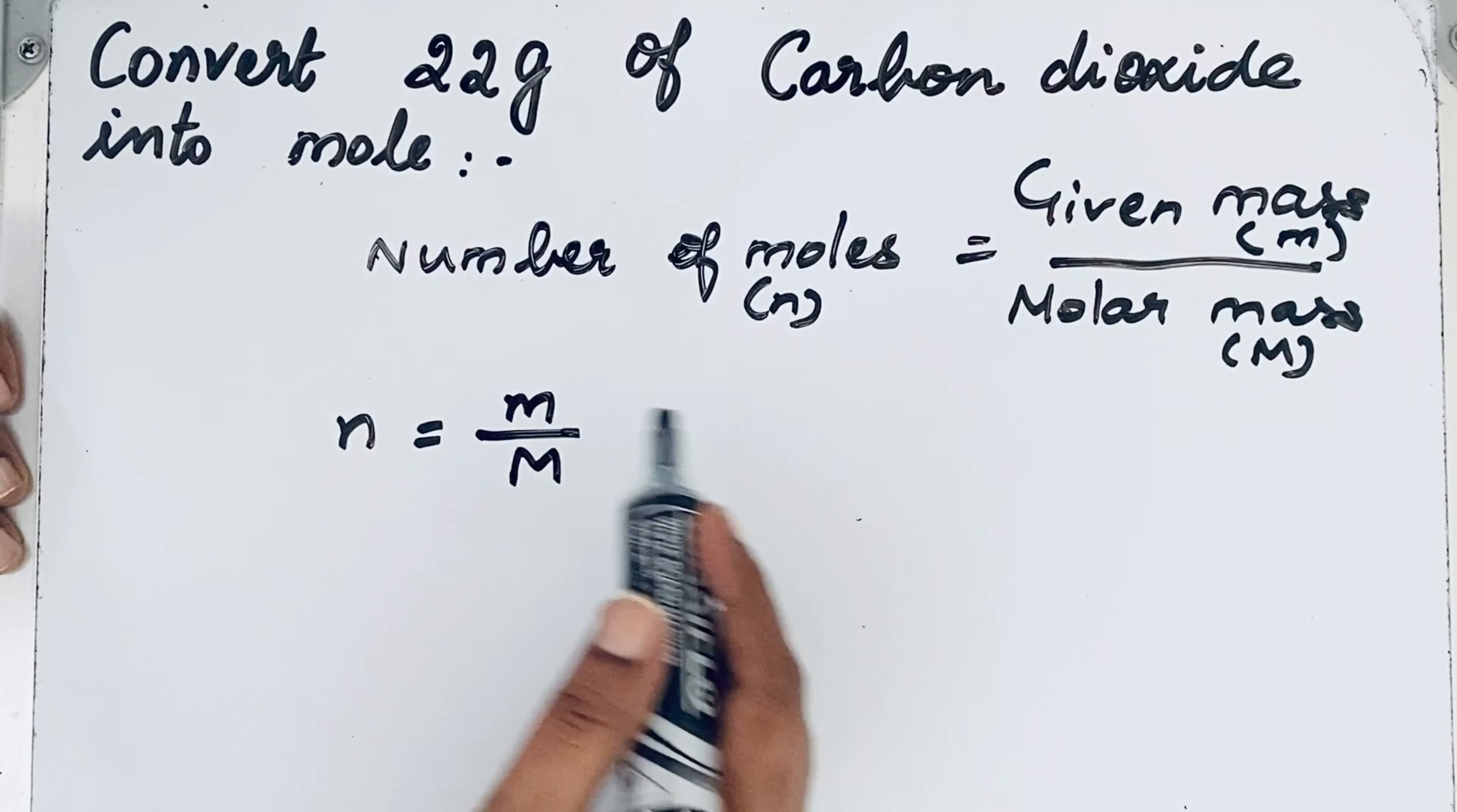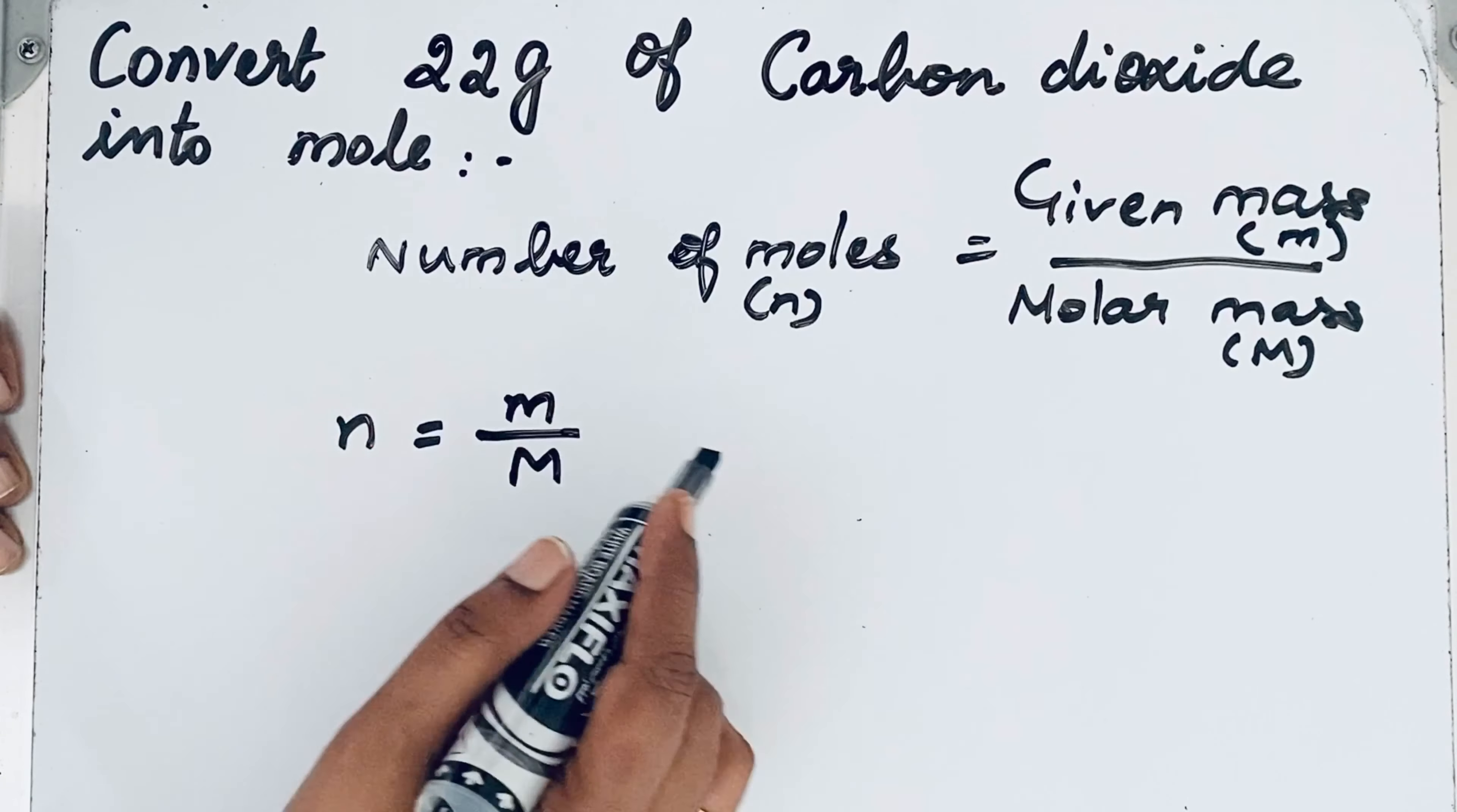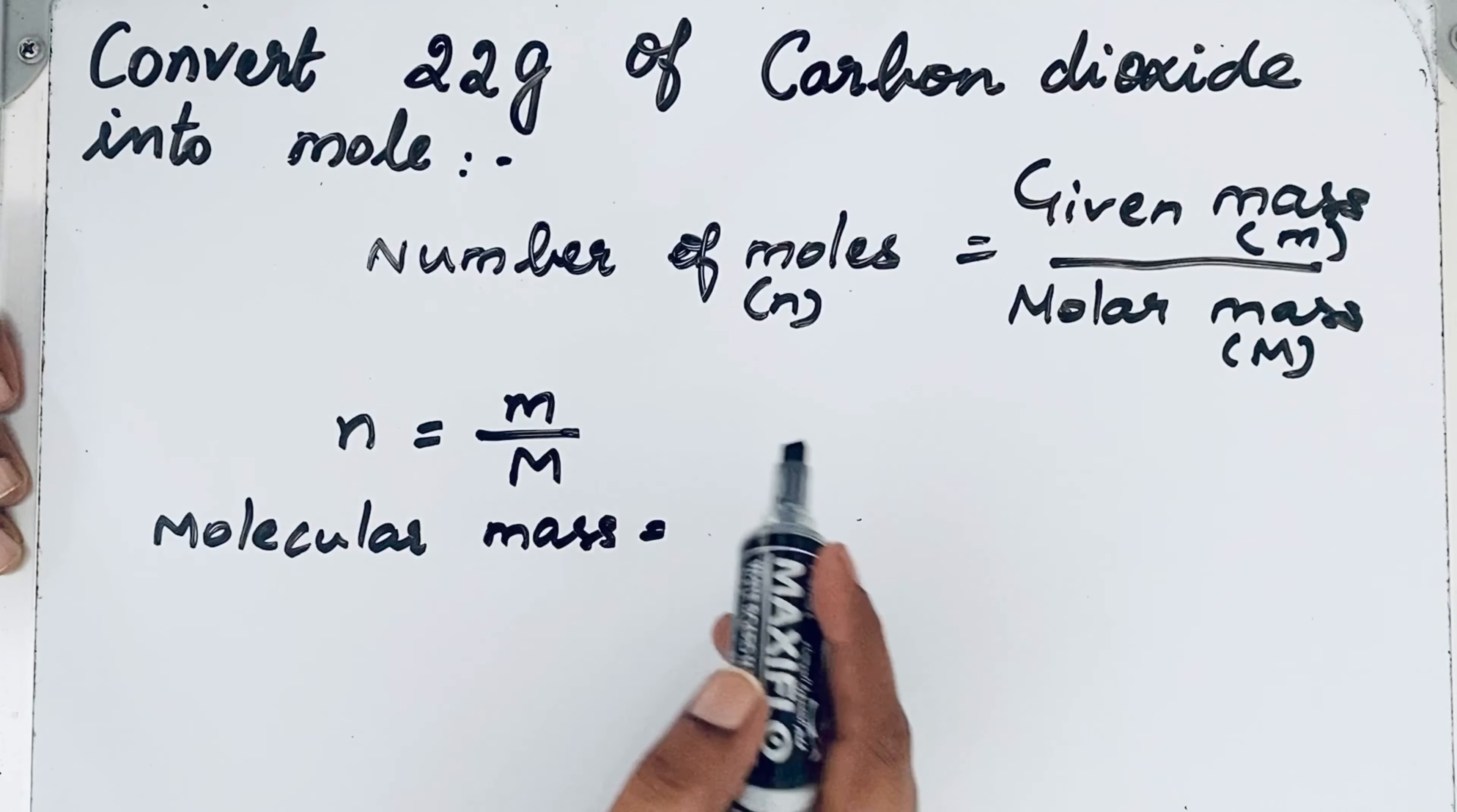So we should find that molar mass. To find the molar mass, first we should know that molecular mass. Molecular mass is the sum of atomic mass of all the elements in the compound. So molecular mass first let us find that. From the molecular mass we can find molar mass.